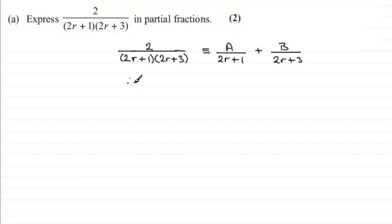And so that's going to leave us with 2 just on the left hand side here. And that's going to be identical to multiplying this fraction with just 2r plus 1, 2r plus 3 would give us A(2r + 3). And then multiplying this fraction with (2r + 1)(2r + 3) would give us B(2r + 1).